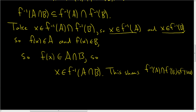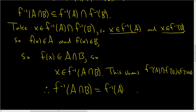We've proved both inclusions. Therefore, the inverse image of A intersect B is equal to the inverse image of A intersected with the inverse image of B. I kind of rushed through that just to keep the video length short, since I derailed at the beginning with the explanation, but you can always pause it. I hope that helps.